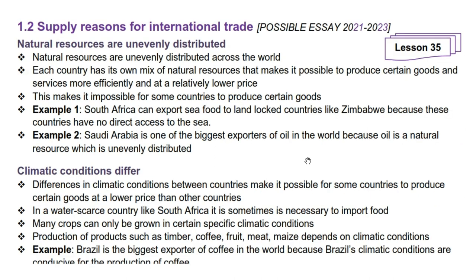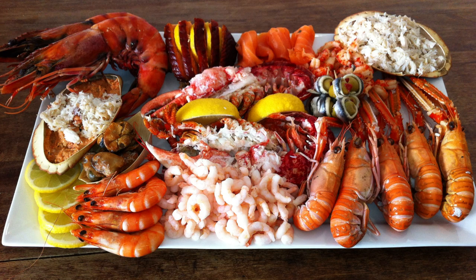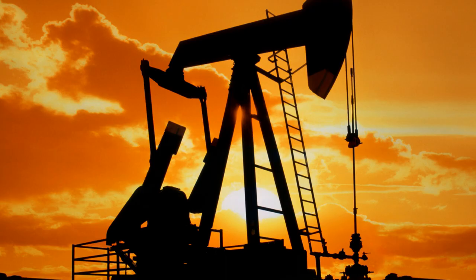Let us now look at supply reasons for international trade. The first one is that natural resources are unevenly distributed across the world. Each country has its own mix of natural resources that makes it possible to produce certain goods and services more efficiently and at a relatively lower price. This makes it impossible for some countries to produce certain goods. For example, South Africa can export seafood to landlocked countries like Zimbabwe because these countries have no direct access to the sea. Saudi Arabia is one of the biggest exporters of oil in the world because oil is a natural resource which is unevenly distributed.